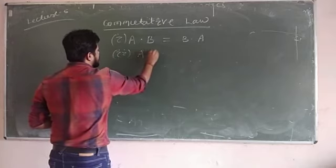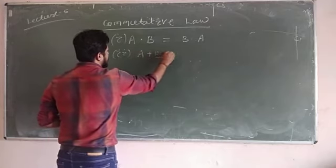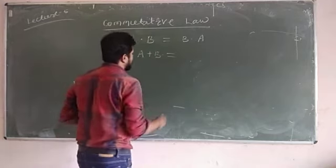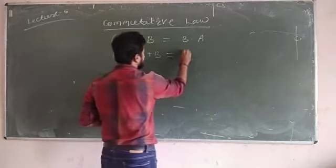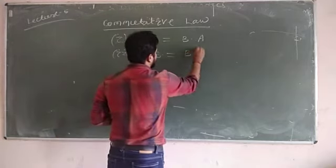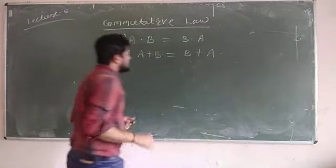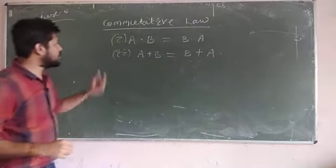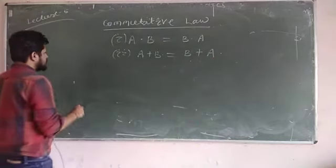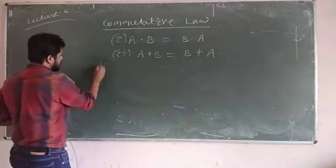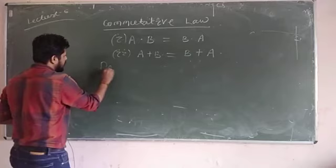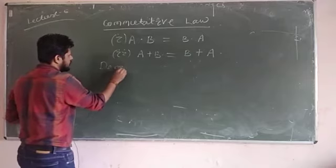A OR B is always equal to B OR A. This is the commutative law. The next is a very important law: De Morgan's theorem.